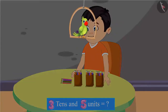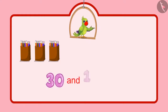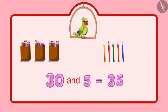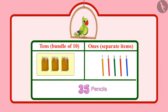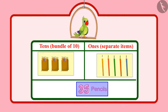Children, can you tell me how many pencils Chotu has now? Chotu had 30 pencils, followed by 31, 32, 33, 34, 35. So Chotu has 35 pencils in total. In 35 pencils, 3 means 3 tenths and 5 means 5 units, which means a total of 35 pencils.